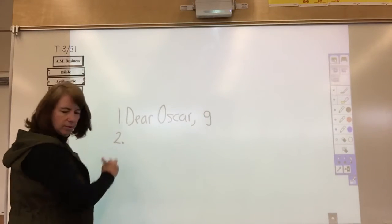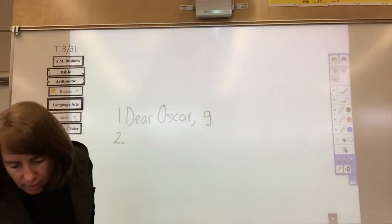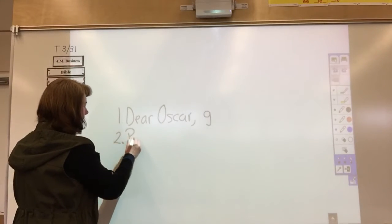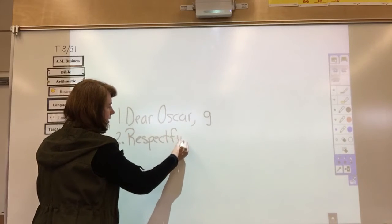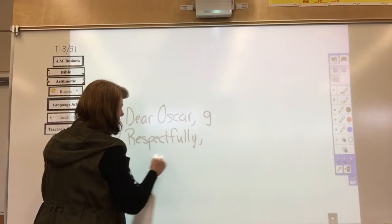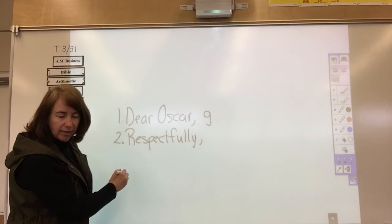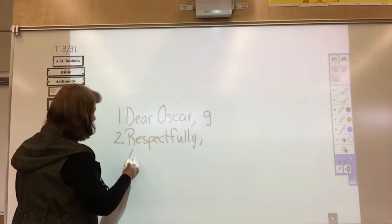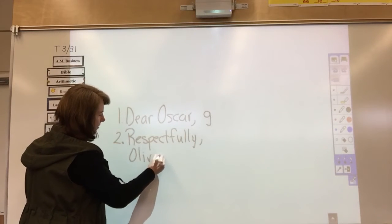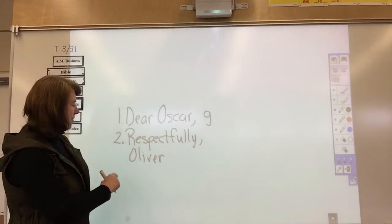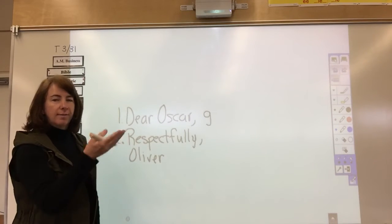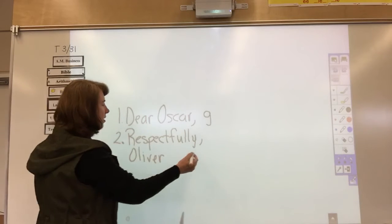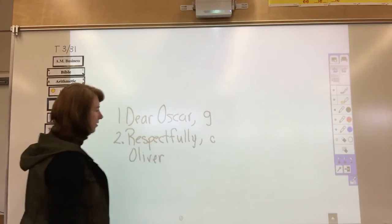Okay, number two says, respectfully, comma, and then the name Oliver. Hey Oliver, hope you're watching this. You're famous. All right. Respectfully, comma, Oliver. Would this be a greeting or a closing? If you said closing, you are correct. Put a C there. It's a closing. Notice a capital R, comma, and then the name is underneath with an O. Great name.